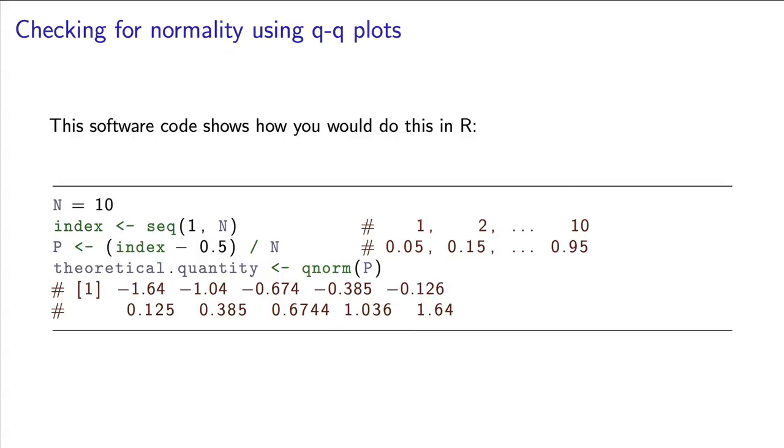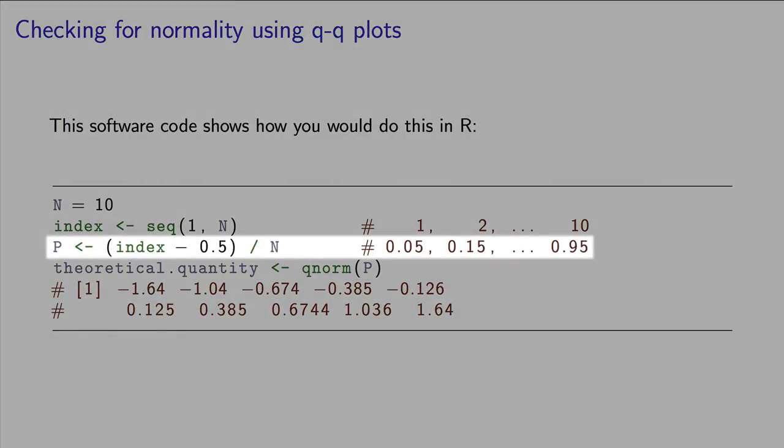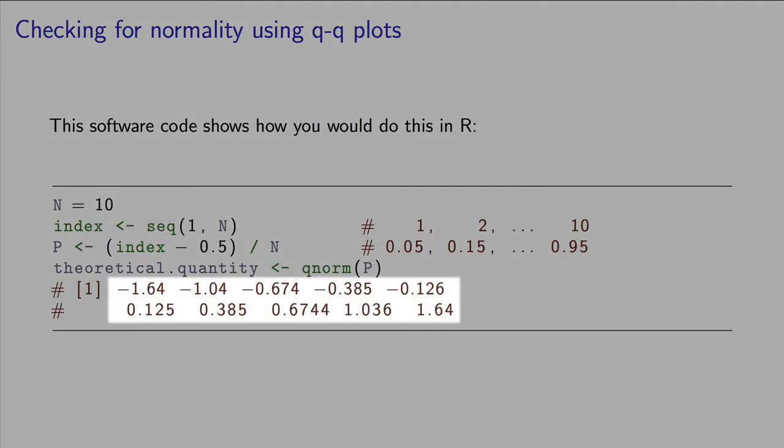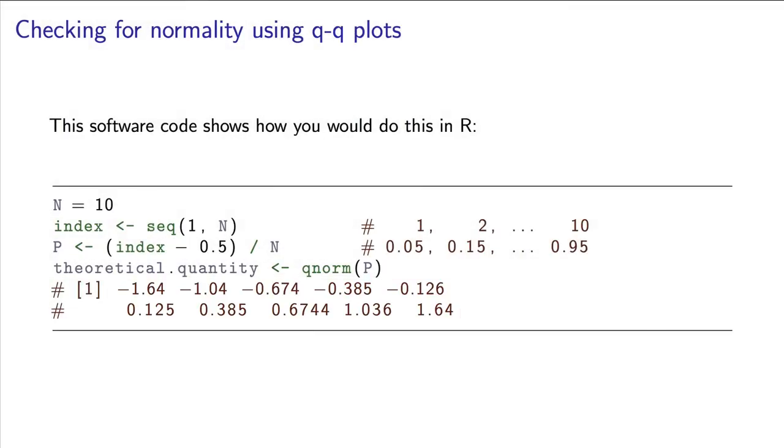In this example shown here on the screen, I have 10 values evenly spaced on the vertical axis, and then we get our 10 z-values, minus 1.64, and so on, all the way up to plus 1.64.